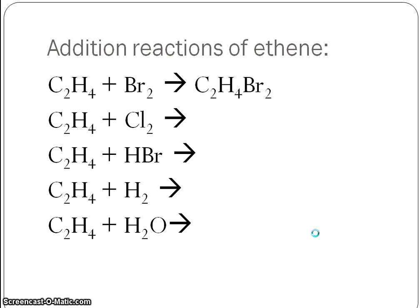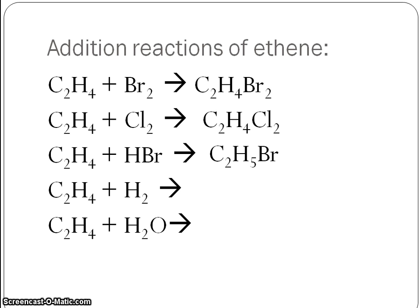Hopefully you agree that the first one is C2H4Cl2 — carbon goes first, then hydrogen, then the halogen. The second one goes from the alkene to the alkane, and the last one is C2H6, with oxygen listed last.